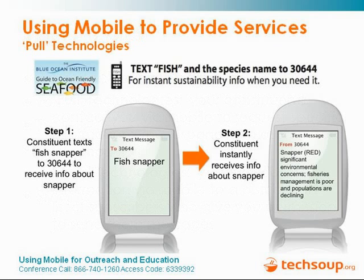We have several people doing pull technologies — that's someone texting in basically a query and wanting to find information. We help the nonprofit expose their data and make that very simple. This example is probably one of our most well-known campaigns: the Phish Phone. With the Phish Phone, a user can text in the word 'phish' and then the name of a fish like tuna, and it looks it up in the Phish Phone's database and texts them back the health and environmental impact of eating that fish.